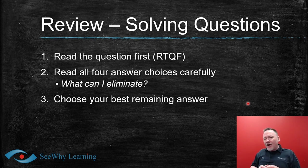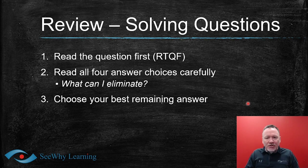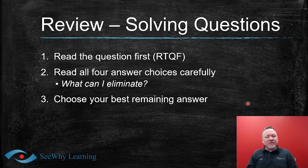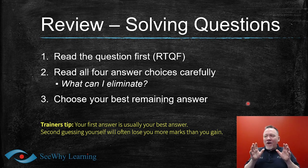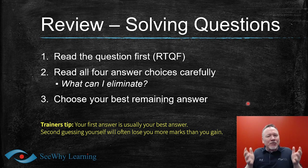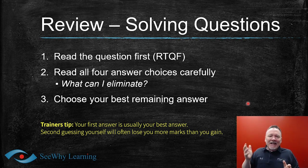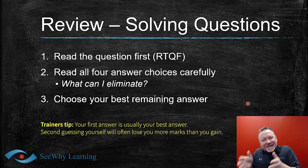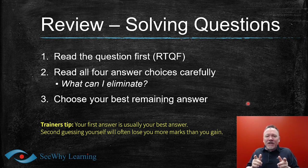One good piece of advice: once you've chosen an answer, don't change it unless you are absolutely 100% certain you've made a clear, obvious mistake — the kind where, for example, the question asked what is 2 plus 2 and you wrote something completely wrong. That's the kind of answer you might change. But otherwise, don't change your answer. Whether you realize it or not, the answer you finally decided on is probably your best bet. Stick to it.